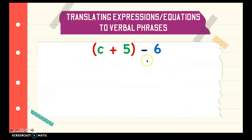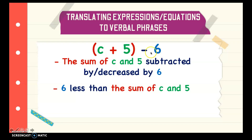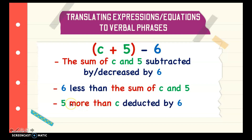Next we have (c + 5) minus 6. Following the GEMDAS rule, we need to perform inside the parenthesis first. So we can say the sum of c and 5, subtracted by, or decreased by 6. Or, if you want to use 6 first, you can use less than: so 6 less than the sum of c and 5. Therefore, you need to get the sum first and then subtract it by 6. Or you can have 5 more than c, deducted by 6.